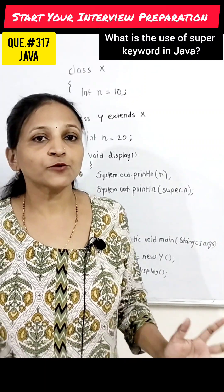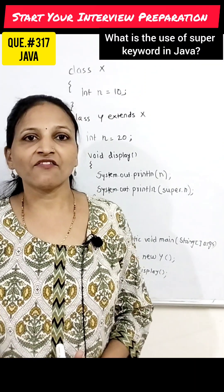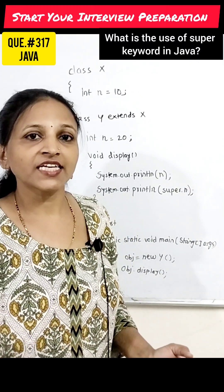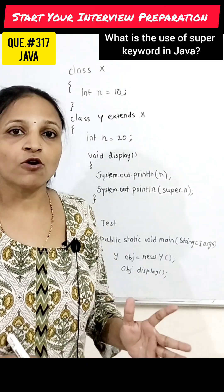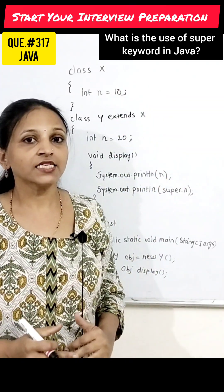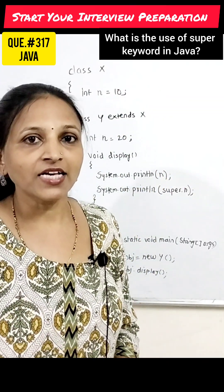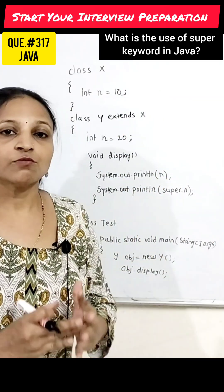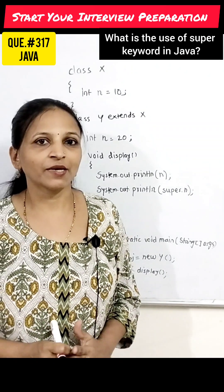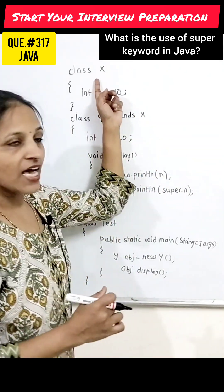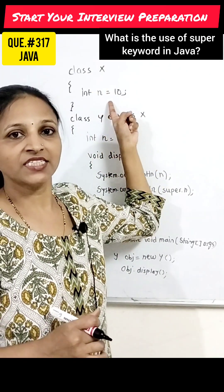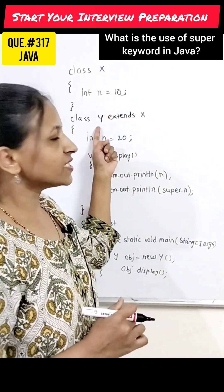Hello students. The super keyword in Java can be used to access an instance variable that belongs to the immediate parent class inside a derived class, if the derived class and parent class both have the same instance variable name. Here, class x is defined and inside it a variable n is declared.